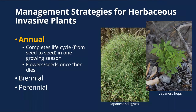Let's jump into management strategies for herbaceous invasive plants. Herbaceous plants are non-woody plants that die back to the ground in winter at least. There are different growth types within this category. Some invasive plants are annuals — a plant that completes its life cycle from germinating from seed to setting seed and dying in one growing season. They flower, produce fruit or seed one time, and then die. A population survives year to year solely by seed production. Two examples are Japanese stiltgrass and Japanese hops.